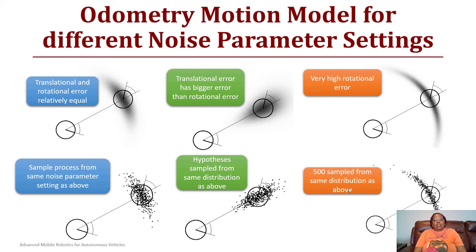Here's what it looks like. The top row is our actual motion model output, and the bottom row are samples of our motion model. The first one, what you see is I have a translational and rotational error that is relatively equal for that first one based upon that banana shape. At the bottom, the samples are similar but obviously not as many because it's a sample.